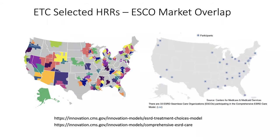This is a map of Hospital Referral Regions in the United States, and the next map shows those selected for enrollment in the ETC model. A number of HRRs selected for ETC participation also were members of the ESRD Seamless Care Organizations, or ESCOs — there is marked overlap between the ETC selected hospital referral regions on the left and the 33 ESRD Seamless Care Organization participants on the right.